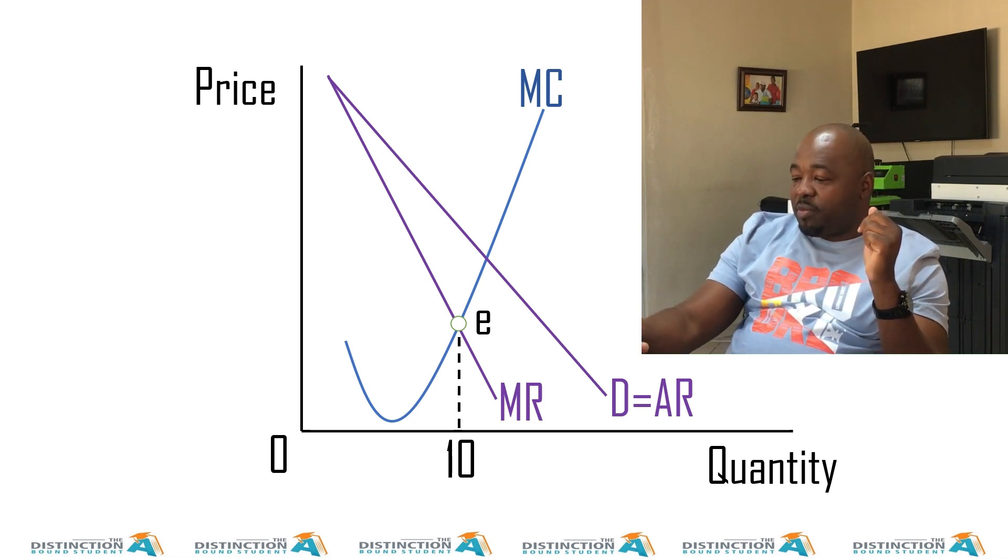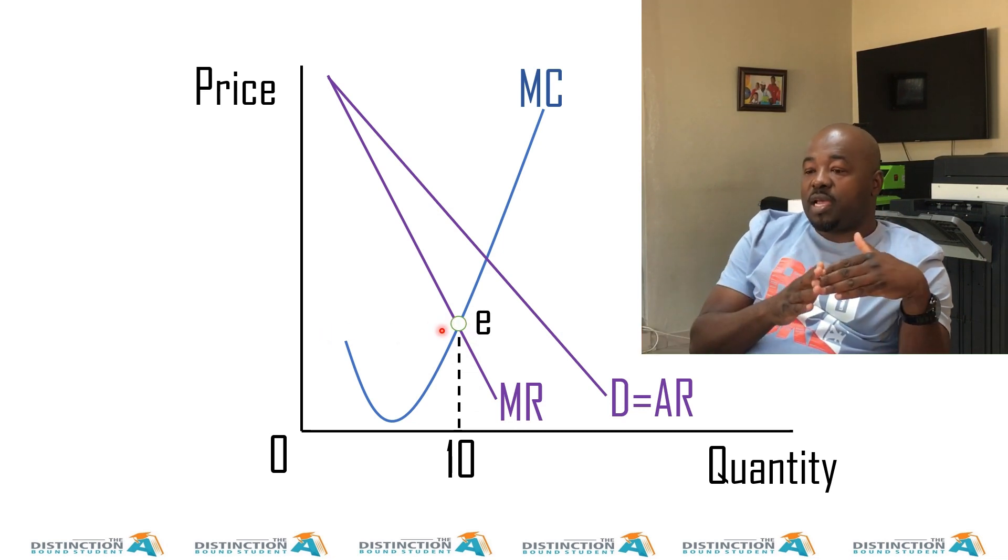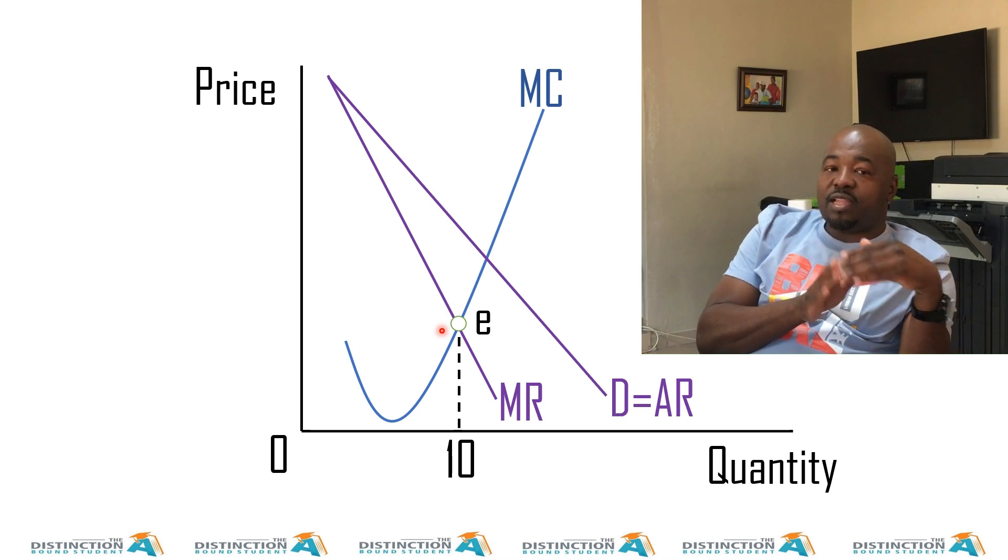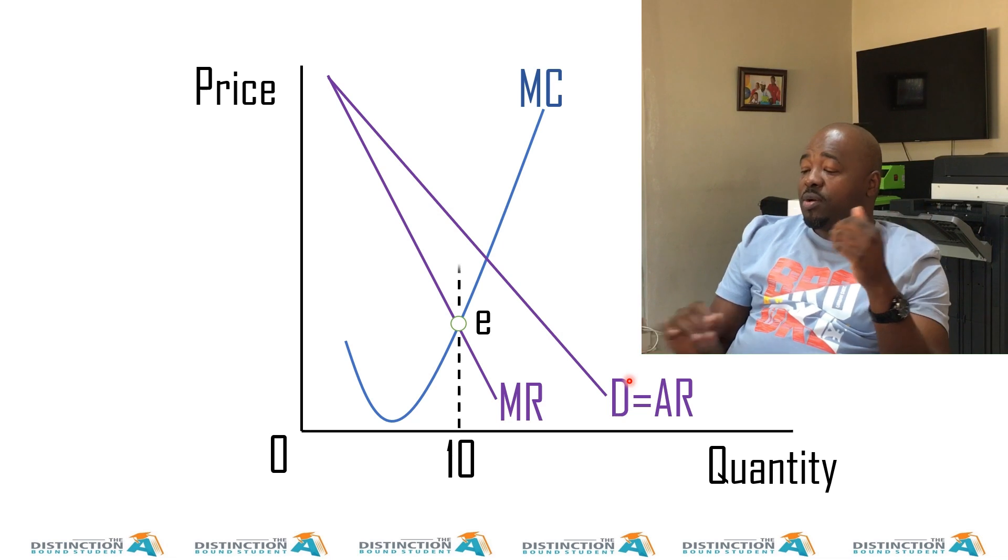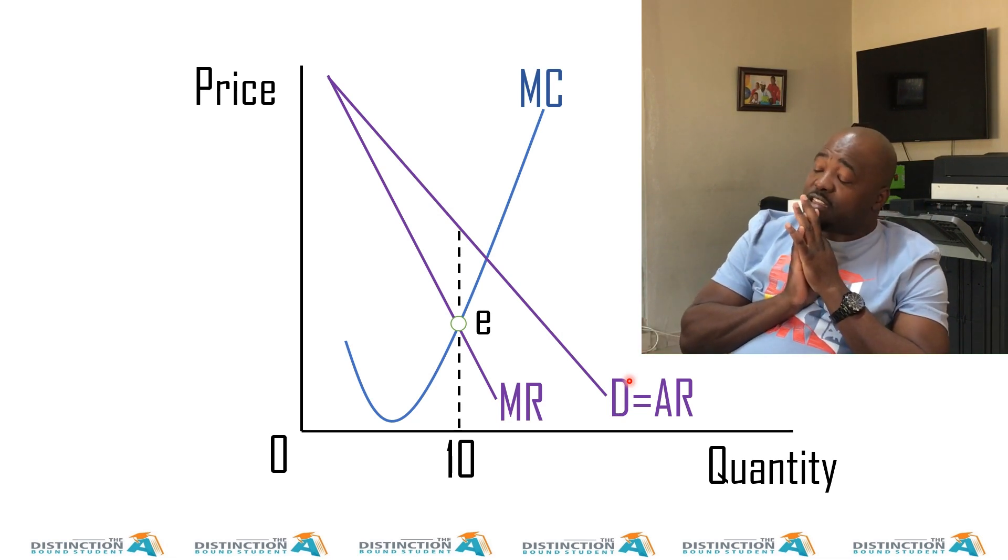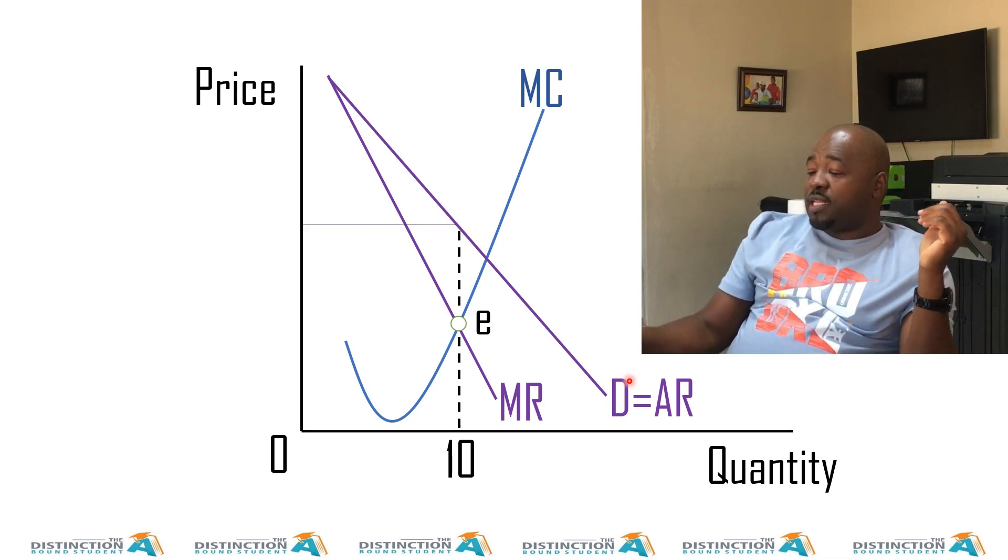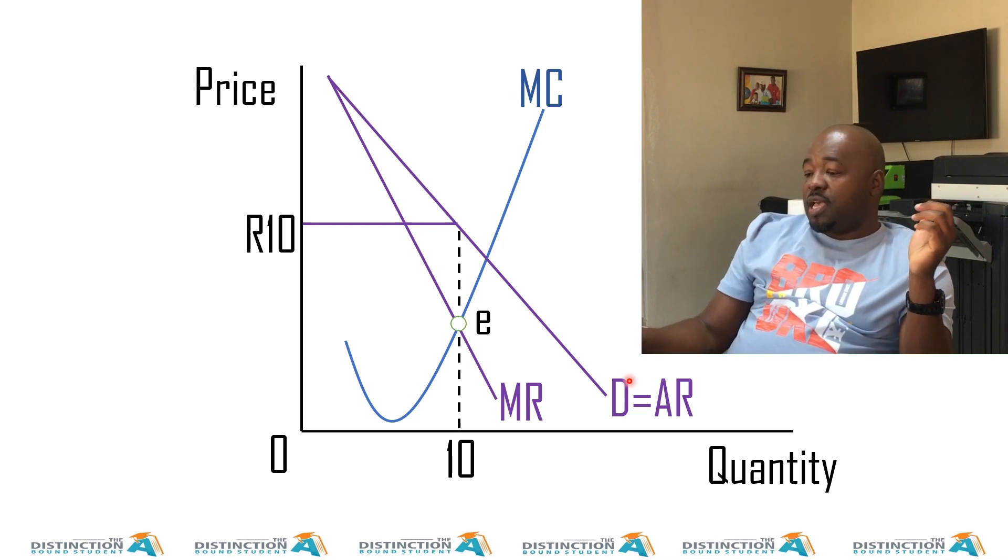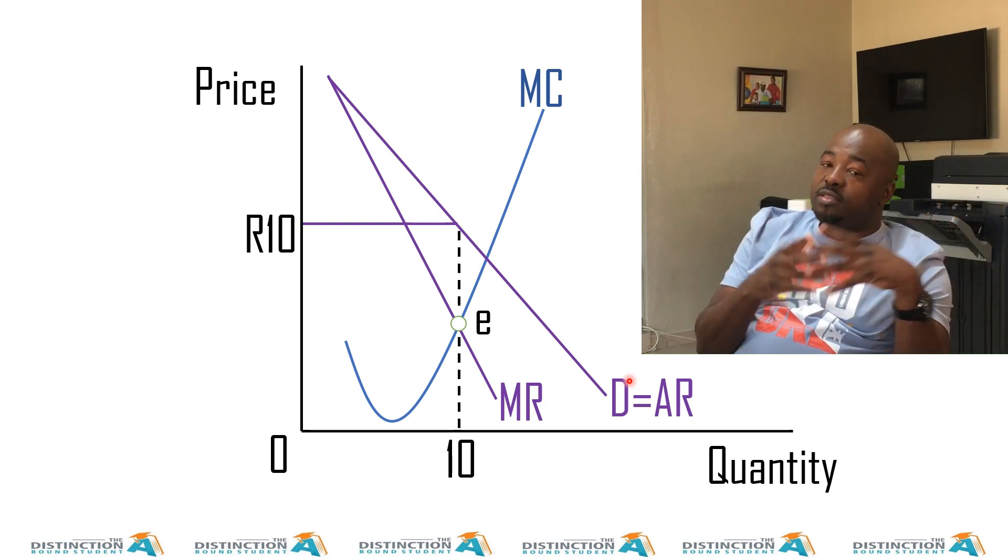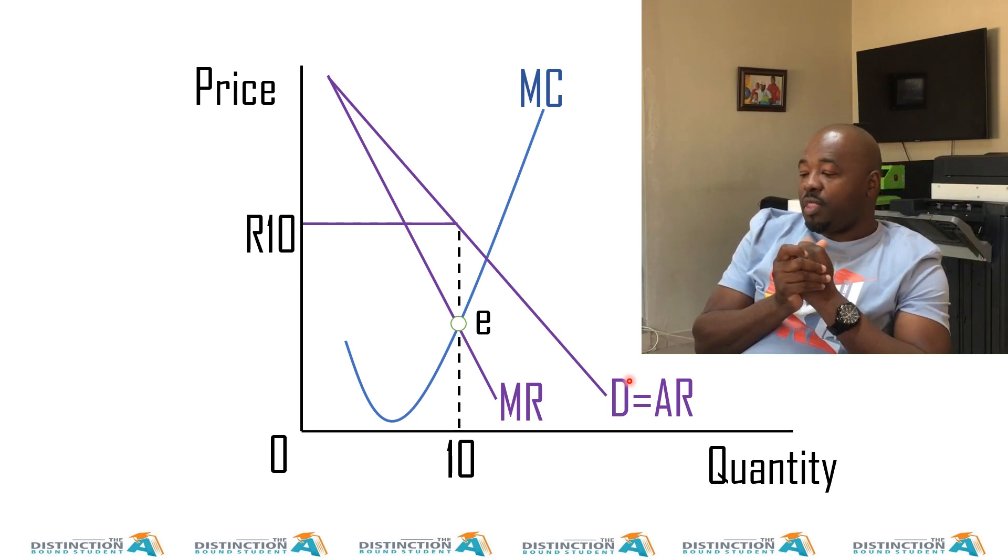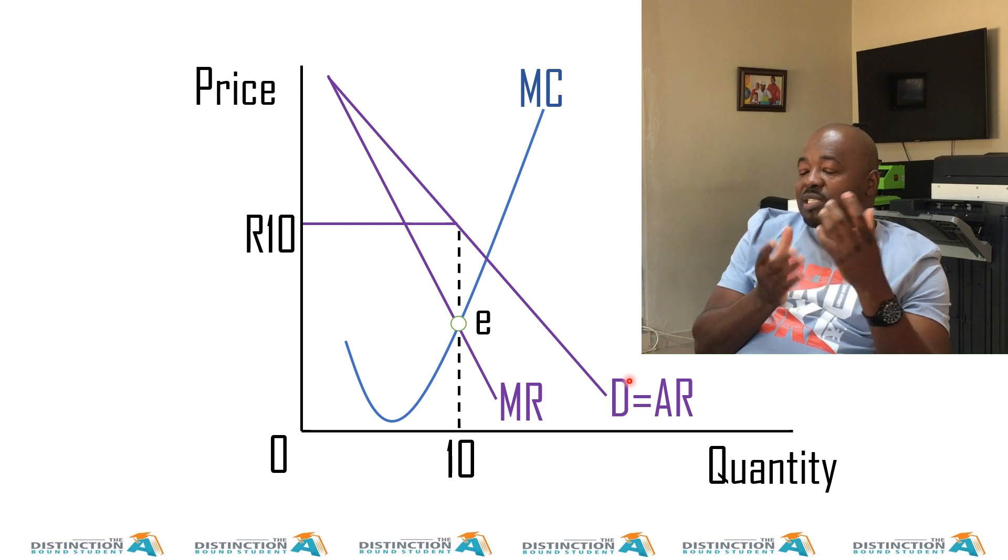Now, like I said in my previous videos, many learners say if I draw it like this, they say then the price is here. They forget what determines price. And if you go to the previous slide, you'll see that demand is that which determines price. So we have to continue with our line until we touch the demand curve. That will then give us the price. So in this case, the price is 10 rands. Now, is this firm making a profit or a loss? And the simple answer is, we don't know. Why is it that we don't know? Because nothing tells us.